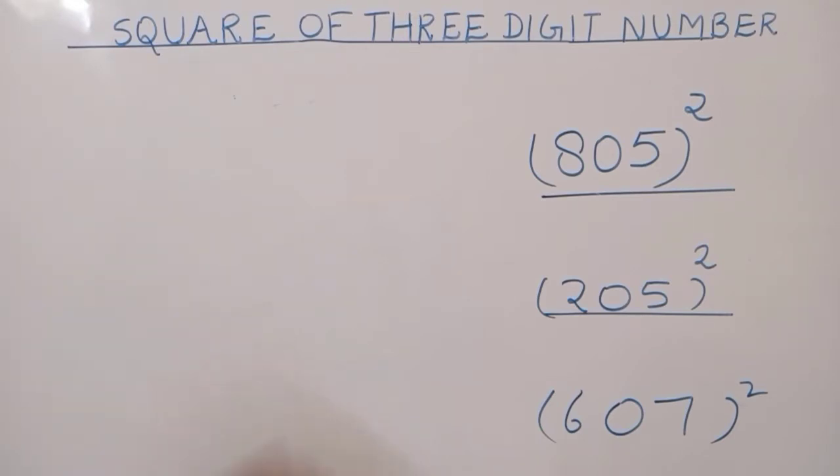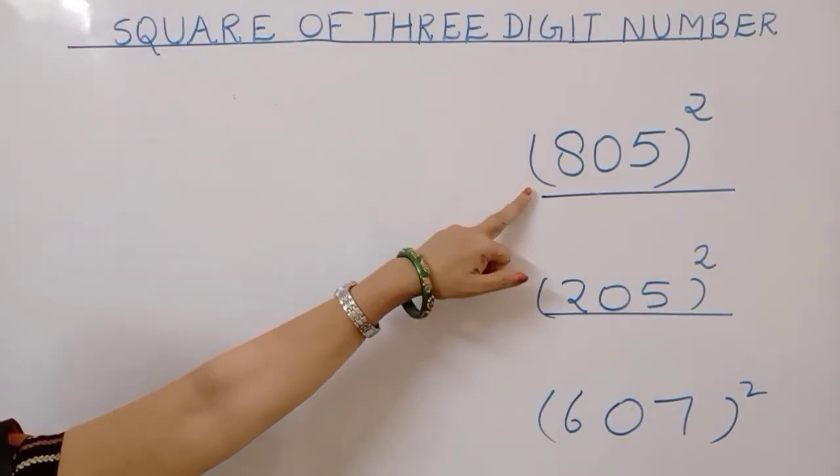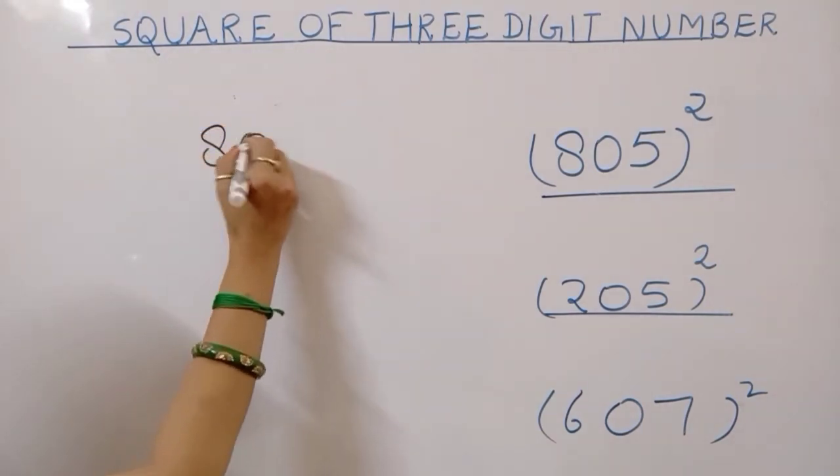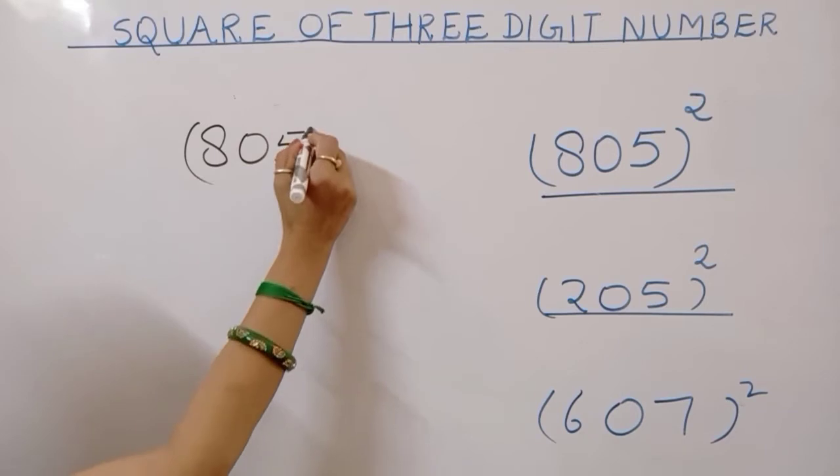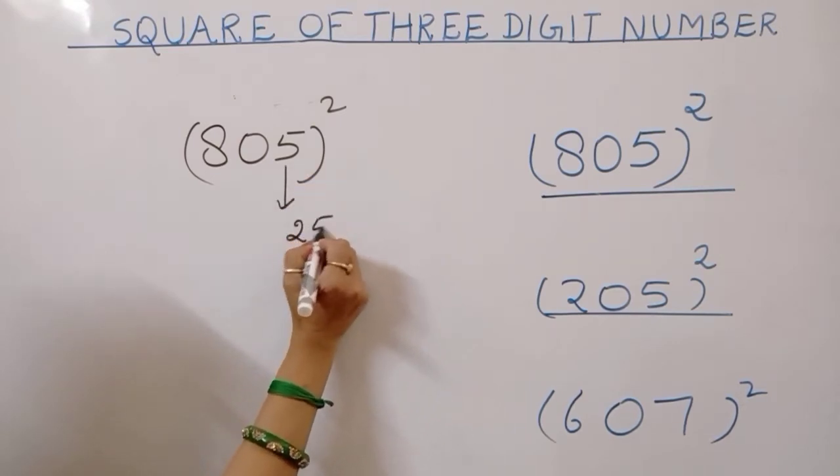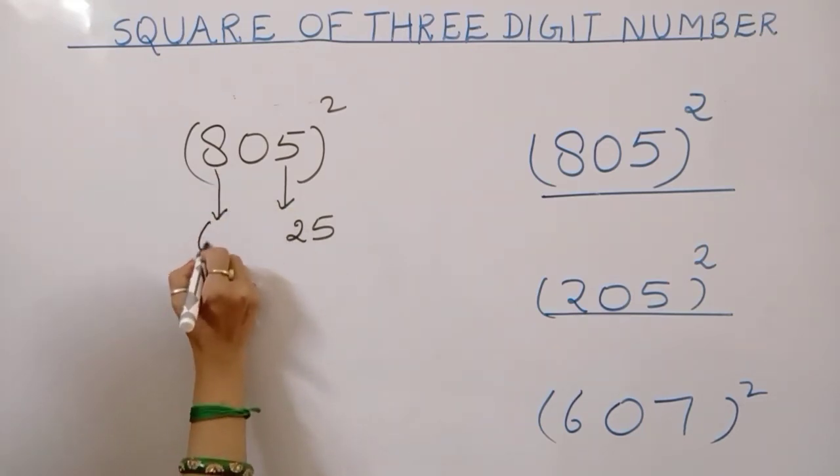First question, I have written 805 square. 805 and we are doing squaring by using trick. First step, you need to place digit ka square kareenge, 5 ka square. 25 and last digit ka square kareenge, 8 ka square, 64.